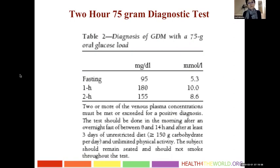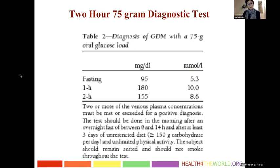The new recommendation is to perform a two-hour, 75-gram diagnostic test as a single step — there is no preliminary 50-gram challenge. Women receive a 75-gram oral glucose load and glucose is checked fasting, at one hour, and at two hours. The criteria for diagnosing gestational diabetes are fasting over 92, one hour over 180, and two hours over 153 mg/dL.